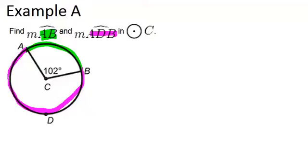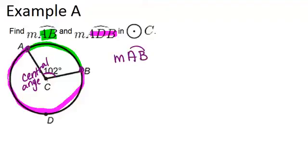What we're given is that this angle is 102 degrees. That angle at the center is called a central angle, and the central angle is always the same measure as the arc that it intercepts. So the measure of arc AB, which is the arc intercepted by that angle, is also 102 degrees.